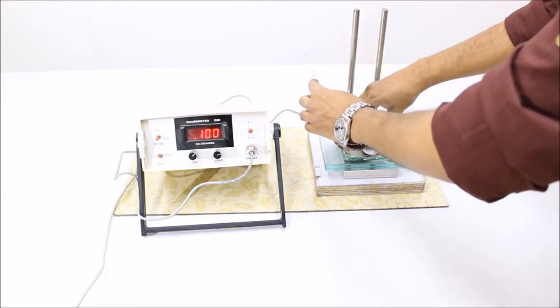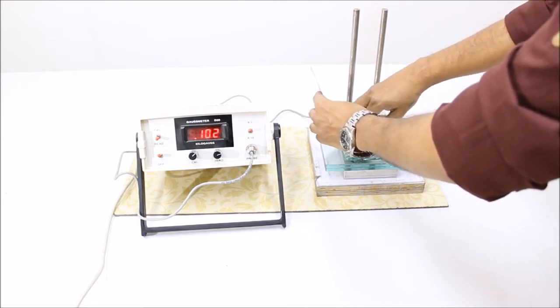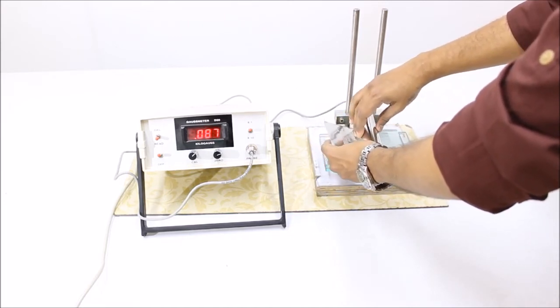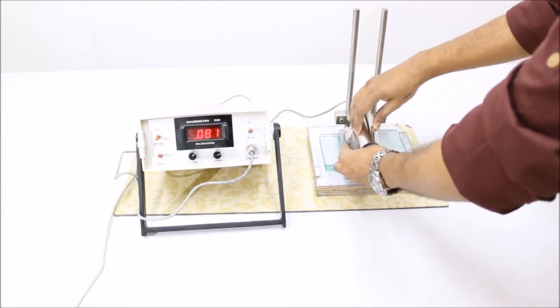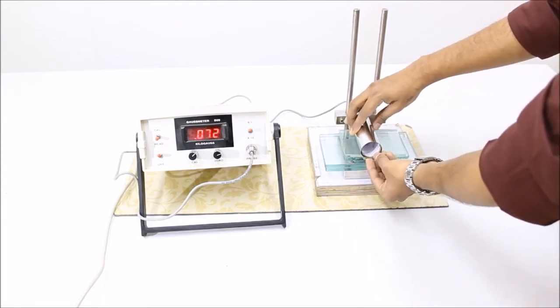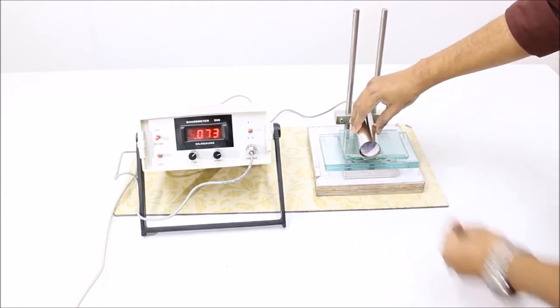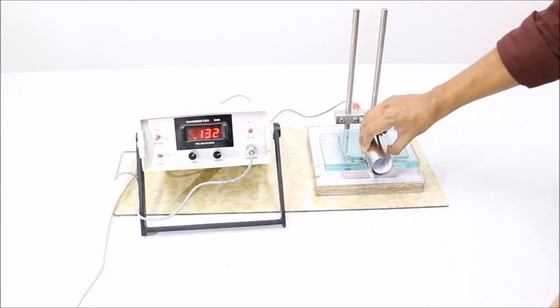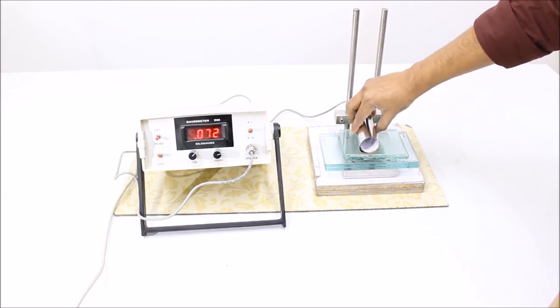As I keep overlapping it, the gauss value will keep on decreasing. You can have such multiple layers for better shielding. It has effectively shielded from 130 gauss to 70 gauss.